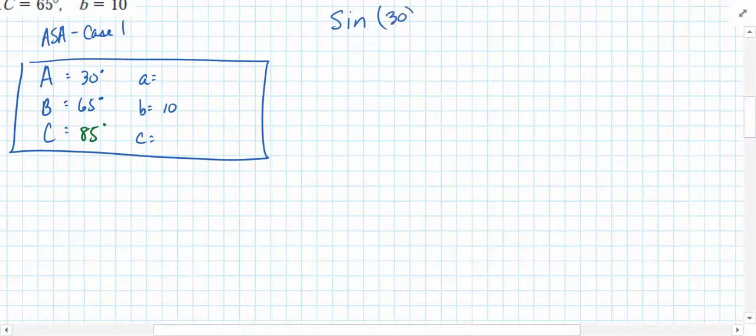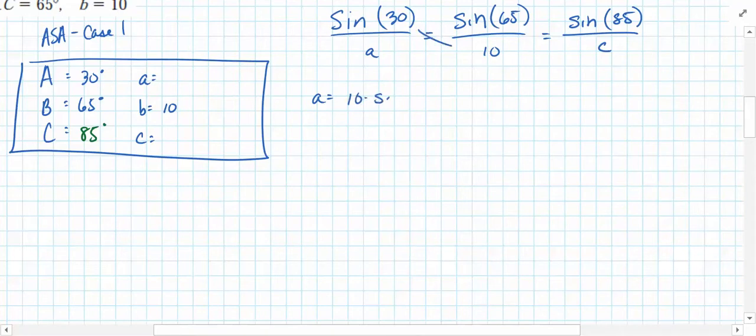So let's set up our law of sines. Sine of A, which is 30 degrees, over A, is equal to sine of 65 degrees, over B, which is 10, which would be equal to sine of 85 degrees, over C. In either case, we'll cross multiply and divide to solve for A and C. So for A, we'll multiply 10 times sine of 30, divide that by sine of 65. For C, we'll multiply 10 times sine of 85, and divide that by sine of 65.